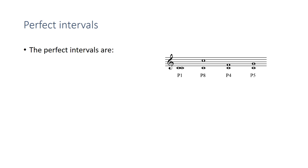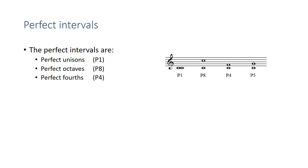The perfect intervals are unisons — perfect unisons like this, when you're singing or playing the same pitch — perfect octaves, perfect fourths, which have a very open sound, and perfect fifths, again with a very open sound. Seconds, thirds, sixths, and sevenths can never be perfect. Only unisons, octaves, fourths, and fifths.